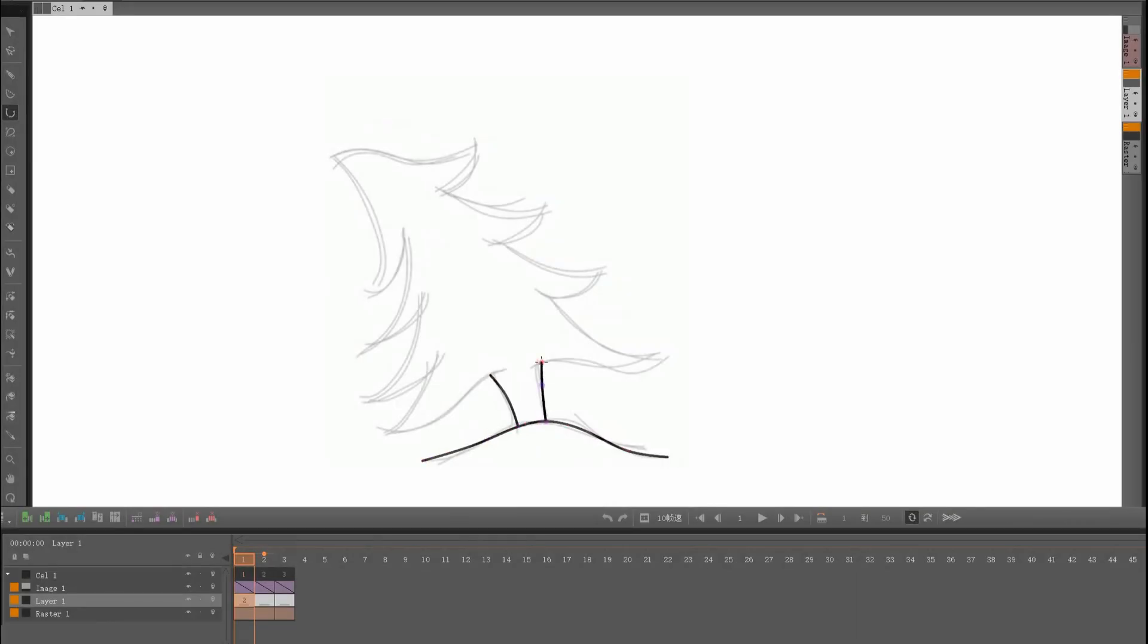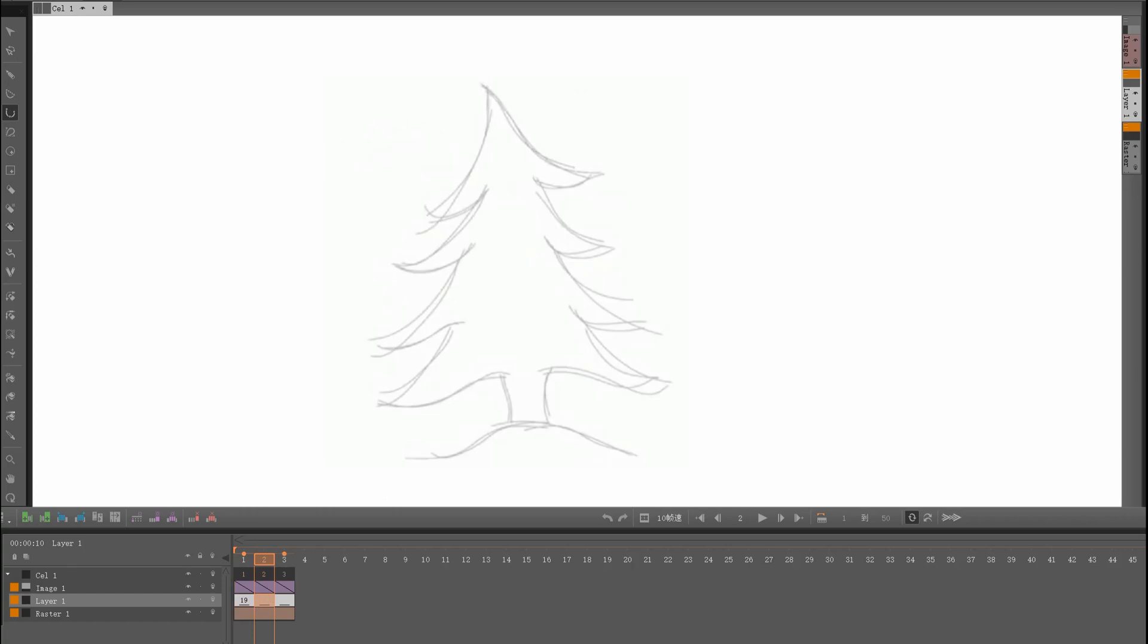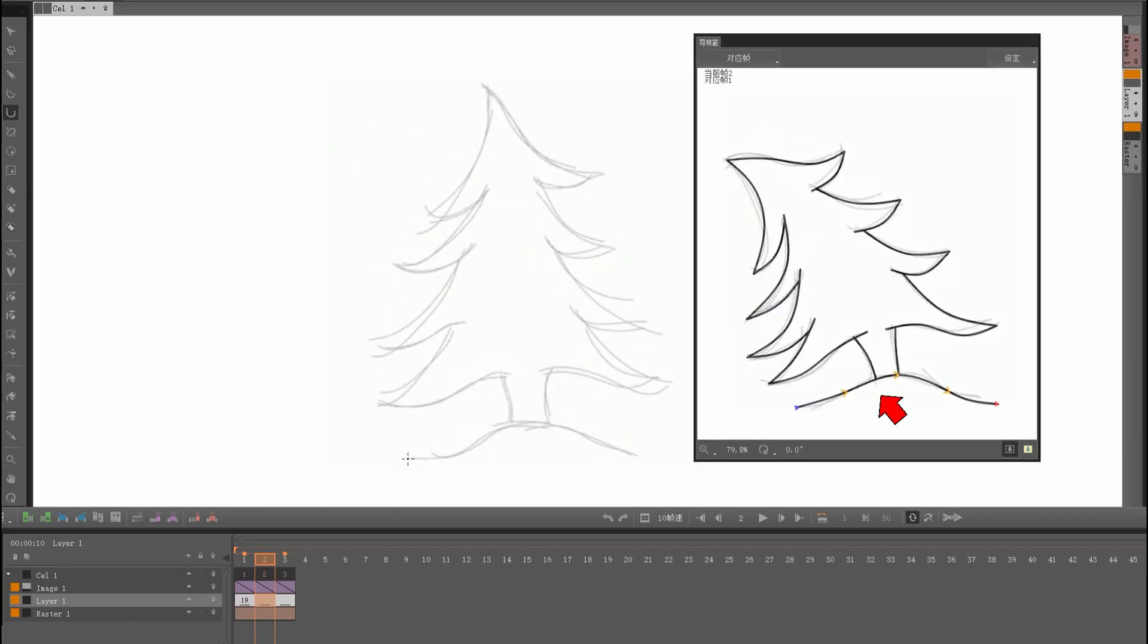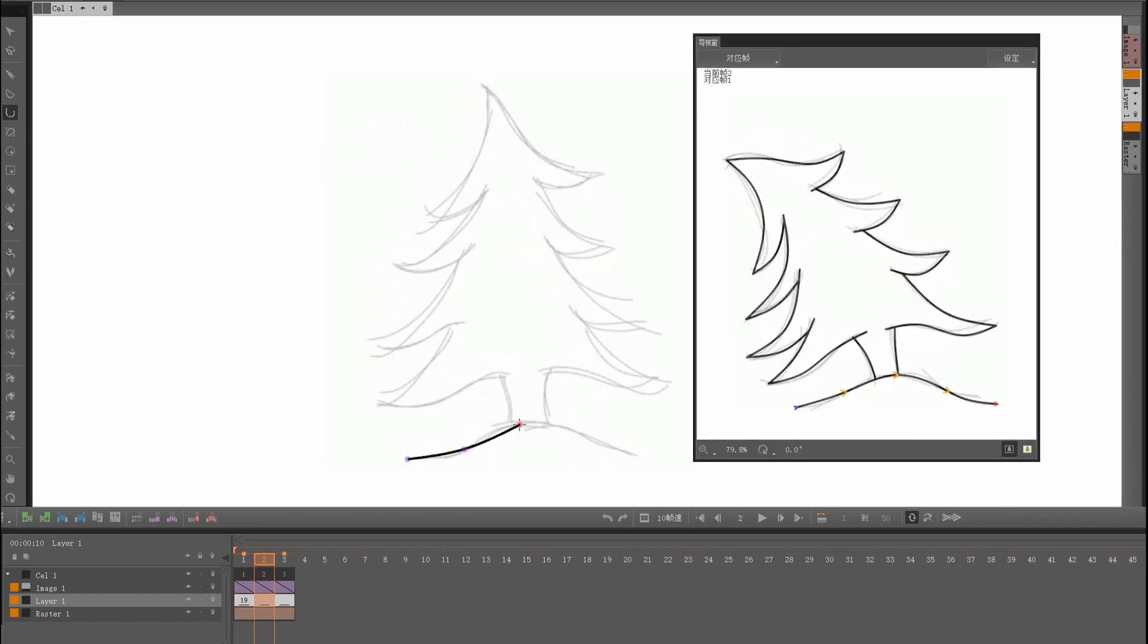In a conventional workflow with an in-betweening product such as CACANY, users are required to redraw all the raster drafts with vector strokes as keyframes. Meanwhile, one-to-one stroke correspondence between keyframes should be ensured.